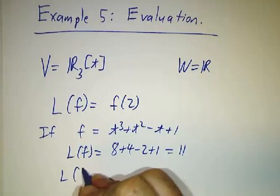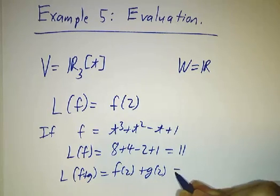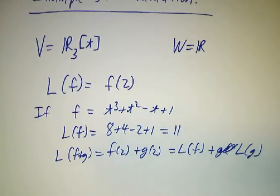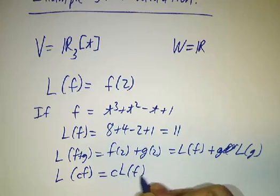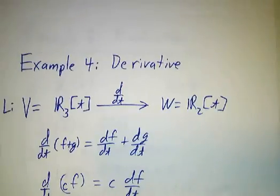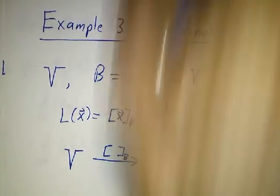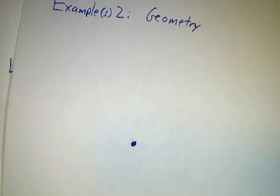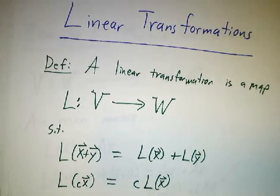If you take L of f plus g, that's f of 2 plus g of 2, which is L of f plus g of f, plus L of g. So this is another linear transformation. Likewise, L of a constant times f is a constant times L of f. So the evaluation map, the derivative, taking coordinates, doing all sorts of geometry, rotations and stretches and flips and the like. And matrix multiplication are all examples of linear transformations. Linear transformations are all over the place. There are good examples throughout mathematics and we're going to study them.